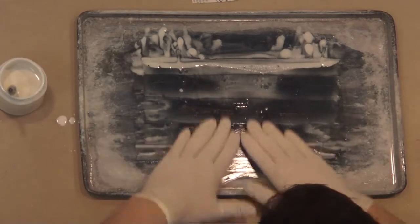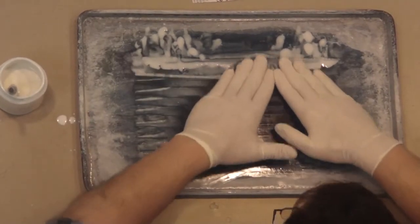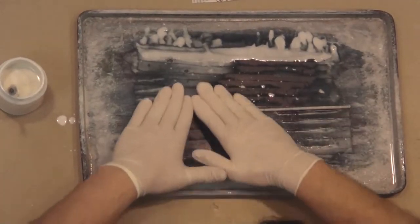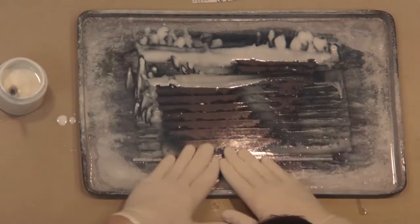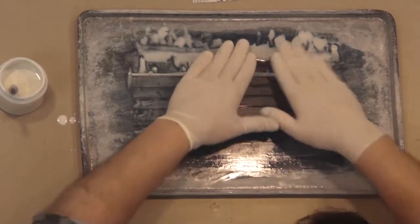Once you have a solid strip, apply more pressure to get excess moisture out and reduce drying time. Notice all the excess makigami rolling solution at the top of my tray.